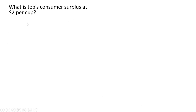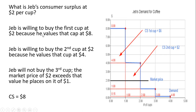What is Jeb's consumer surplus at $2 per cup? The market price is $2, so how many cups of coffee will Jeb buy? He'll buy two. Jeb will buy the first cup because he values it at $8 and only has to pay $2. Jeb is willing to buy the second cup at $2 because he values it at $4 — the height of the demand curve for the second cup. Jeb will not buy the third cup because the market price exceeds his maximum willingness to pay. Consumer surplus is the area between the height of the demand curve and the market price up to the last unit consumed — in this case, two units.